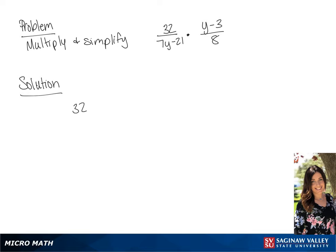We are going to multiply and simplify these two fractions. We have 32 over 7y minus 21, times y minus 3 over 8.